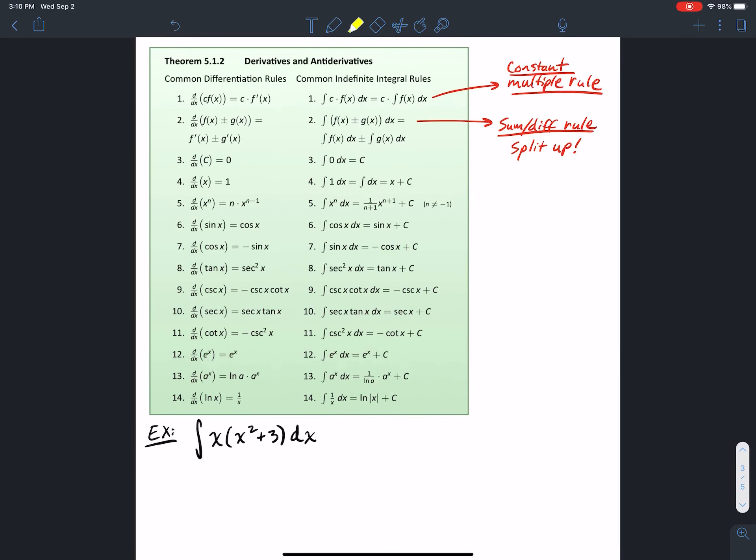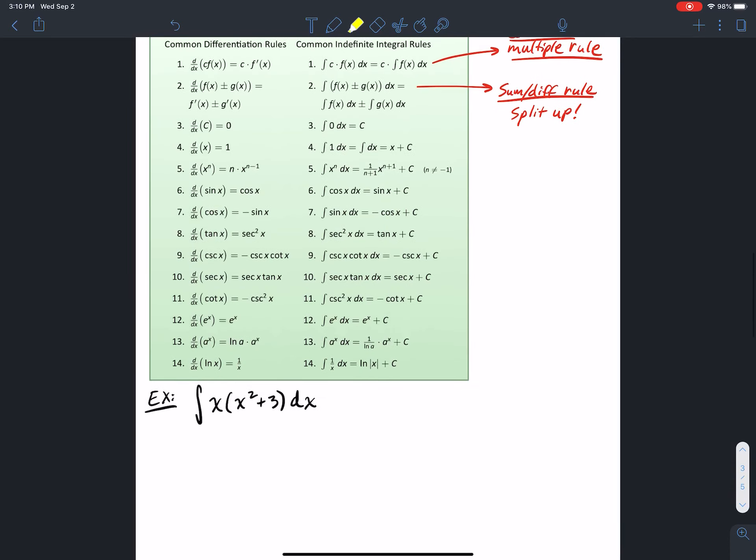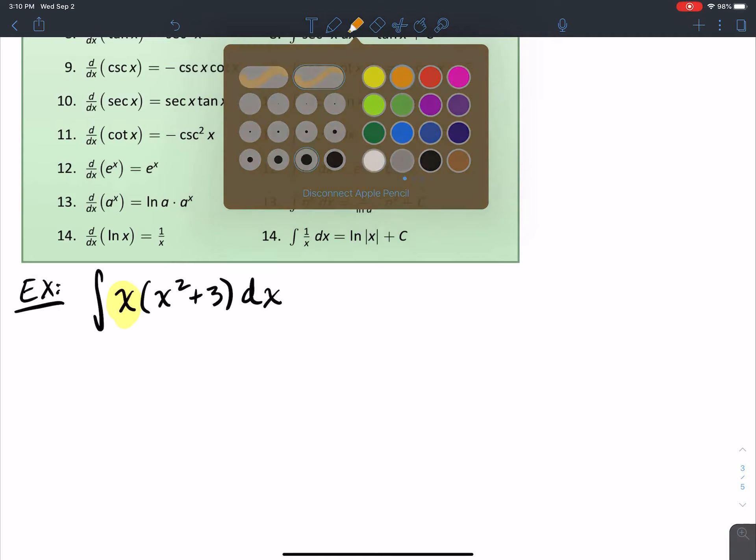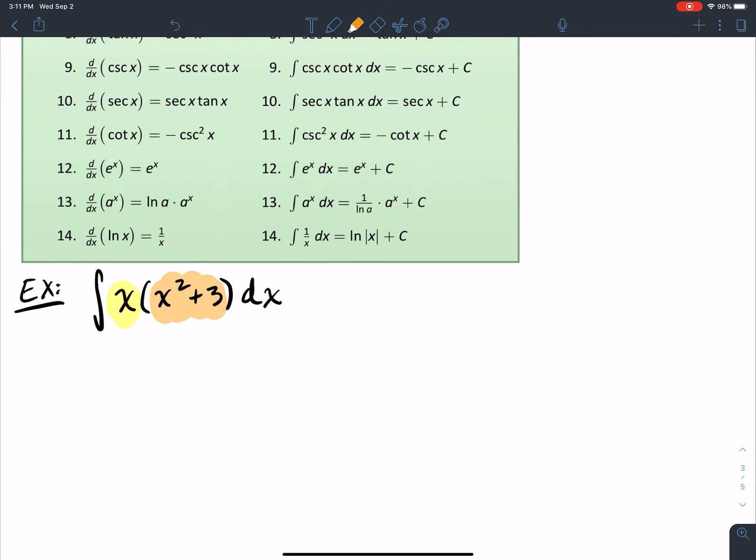All right. So let's do an example. With this example here, I have x multiplied by x² plus 3 in here. We don't have techniques to handle the integral of a function times another function dx. We don't have those techniques right now. So what I need to do is I need to multiply this out. So if I multiply this out, what do I get? Well, x times x² is x³, and x times 3 is 3x. So the integrand becomes x³ plus 3x dx.